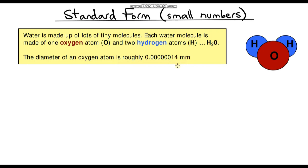Whenever we write anything in standard form, we always have to have a base number, and that always has to be between 1 and 10 — hopefully you remember that from the previous videos. Using these digits, our base number is going to be 1.4, because 14 is too big. So our base number is 1.4, and similarly with really large numbers, we always multiply by 10.